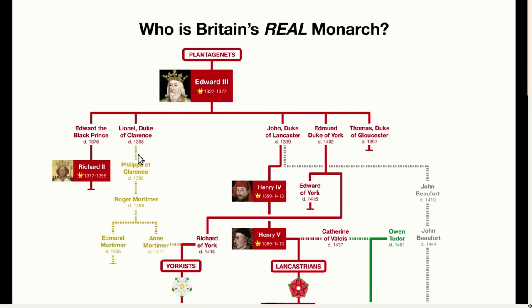So being that Philippa here was an only child, under the male preference system the throne should have passed through her. She was actually dead by 1399, and so was her firstborn son Roger. But Roger had a son named Edmund who was living at the time. So really, the throne should have gone straight from Richard II to Edmund.